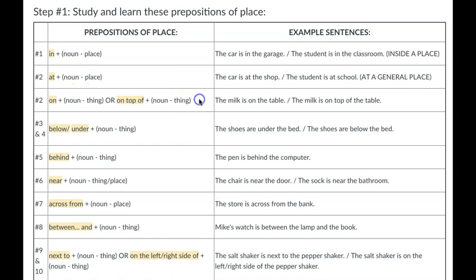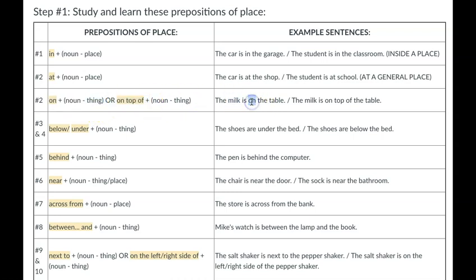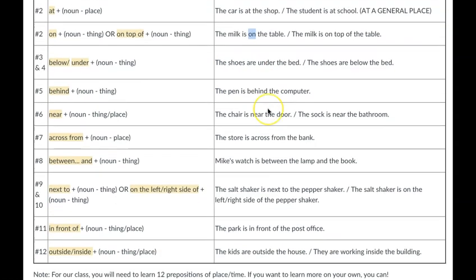'On' and 'on top of' are the same — they have the same meaning and you can use either. 'On' means it is touching. So the milk is on / on top of the table — it's touching the table.